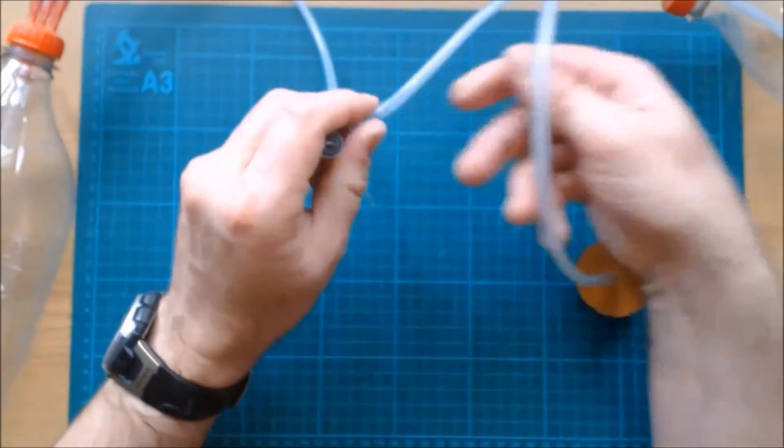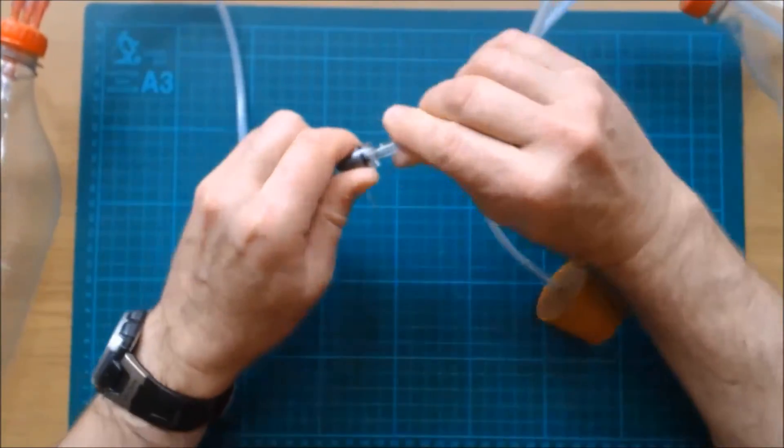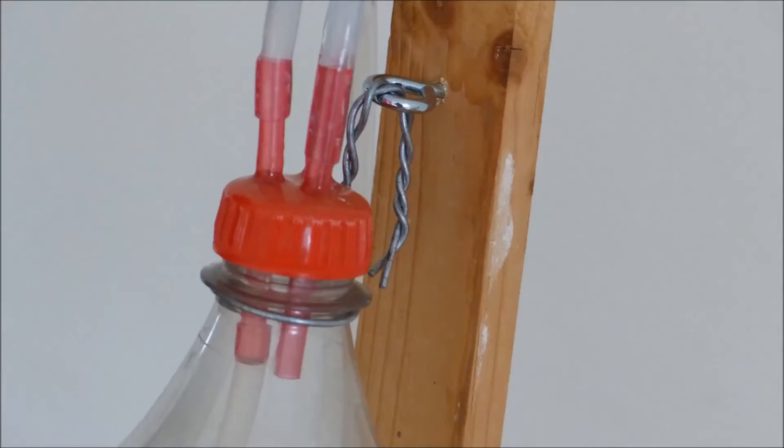Finally, connect the output pipe from the gas generation bubbler to the non-return check valve. Attach the soda bottles to a length of wood using screw eyes.